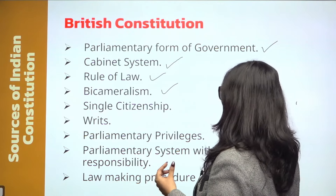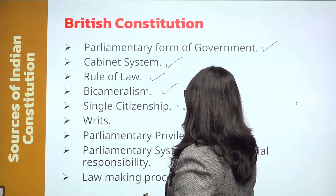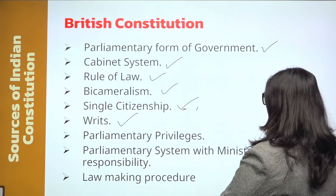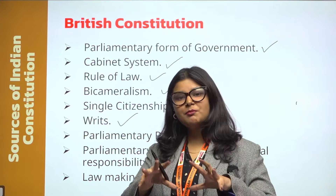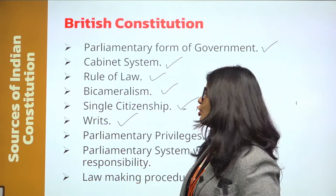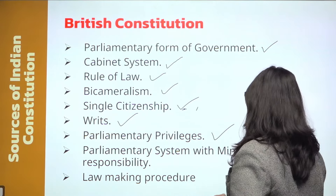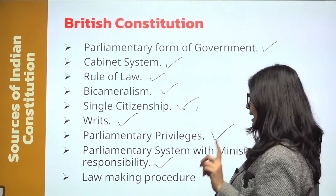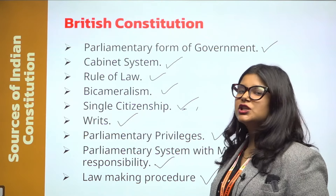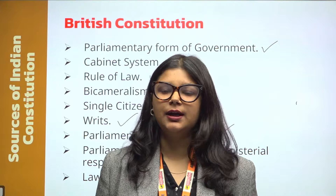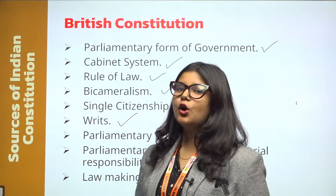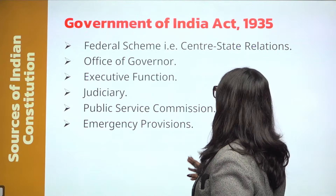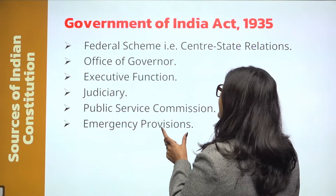Single citizenship is also adopted from the British Constitution. In India, it doesn't matter whether you live in Uttar Pradesh, Rajasthan, or any state — you are given a single citizenship of the whole of Bharat. Parliamentary privileges, which give certain rights to members of Parliament, are also adopted from the British Constitution. The parliamentary system with ministerial responsibility is also adopted from the British Constitution.